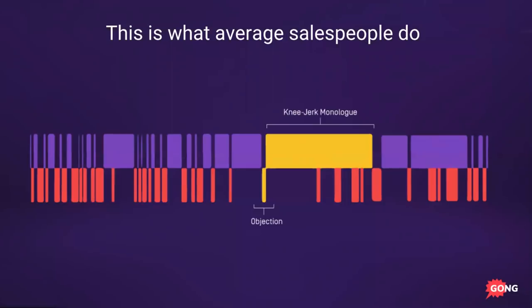Here's what most salespeople do instead of responding with questions: the objection gets the seller all riled up, triggers some insecurity, and they pounce on it. They go on what we like to call a knee-jerk monologue where the customer voices a valid concern and the sales rep spends the next 30 to 60 seconds steamrolling. This reeks of insecurity and triggers red flags in the buyer's brain.